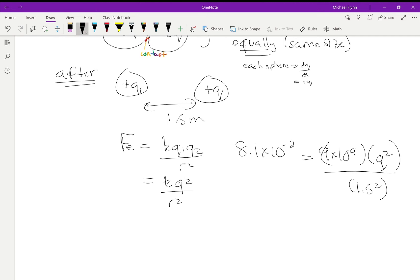Now what you do is you will find q. I'm going to actually do this one for you. So it's 8.1 exponent negative times 1.5 squared, divided by 9 exponent 9, square root. I get 4.5 times 10 to the negative 6, so q here is 4.5 times 10 to the negative 6 coulombs.